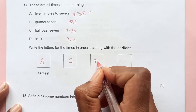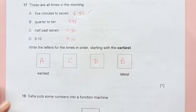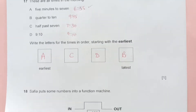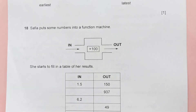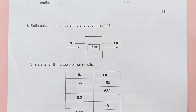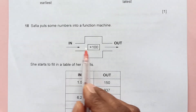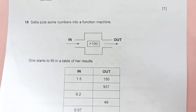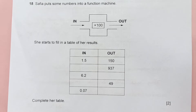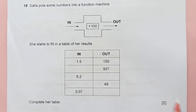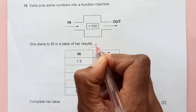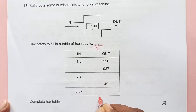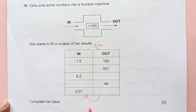Number 18: Safia puts some numbers into a function machine that multiplies by 100, and she starts to fill in a table of results. It's times 100 going left to right, so going right to left it will be divide by 100. We will work accordingly.